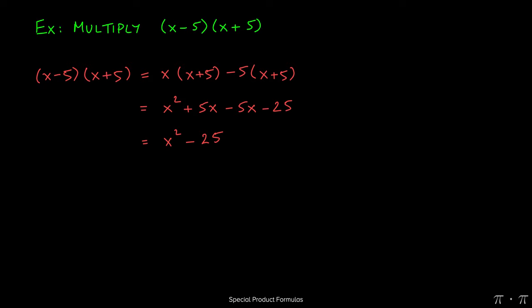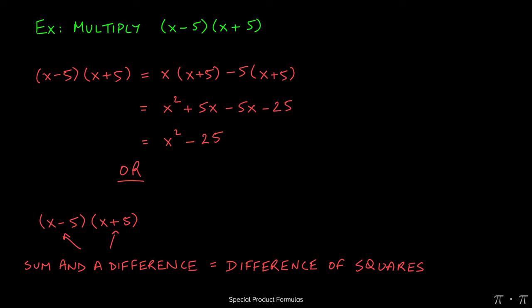If we wanted to use the shortcut to do this, we could just recognize that this is really just a sum and a difference. It doesn't matter which term is written first. As long as you have one term with a minus and one with a plus, we can use the sum and a difference formula, which means that this product is going to be simply the difference of squares.